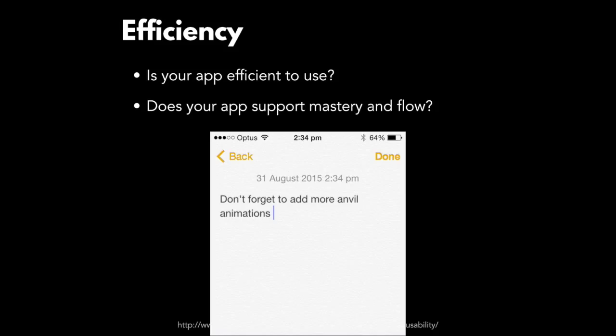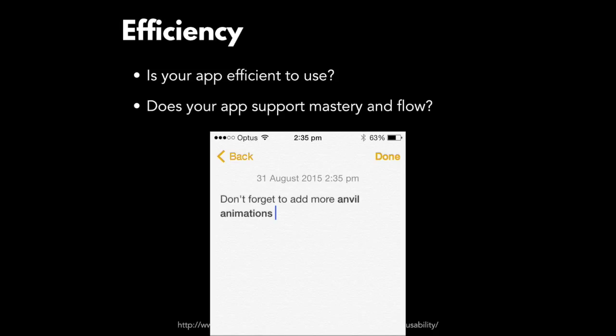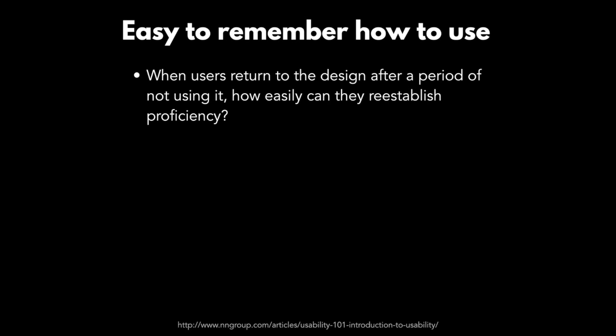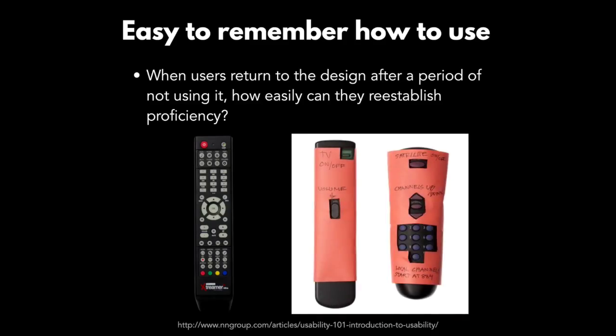Your app should be easy to remember how to use. When users return to the design after a period of not using it, how easily can they reestablish proficiency? With a TV remote it can be quite difficult, and I've seen people attempt to make it easier, especially for older users, just to make sure they can remember how to use it.